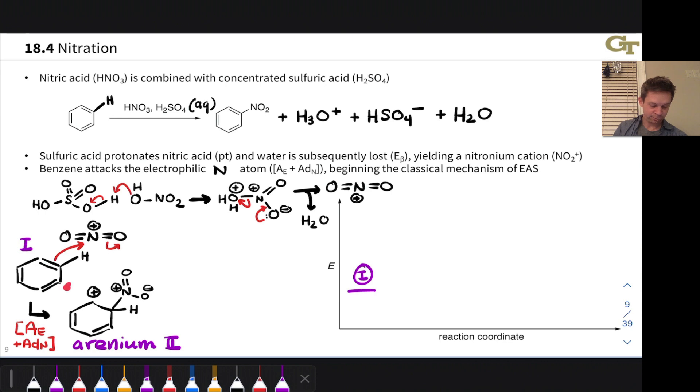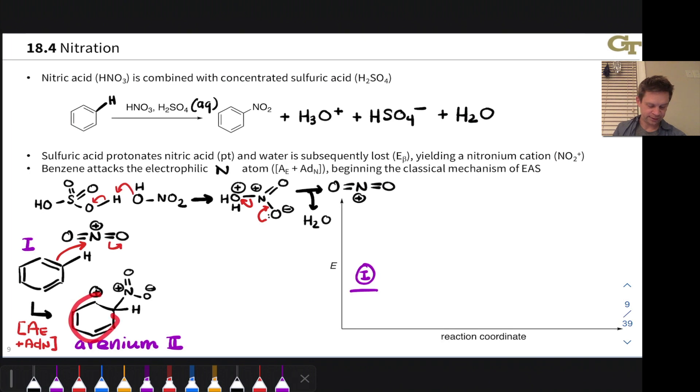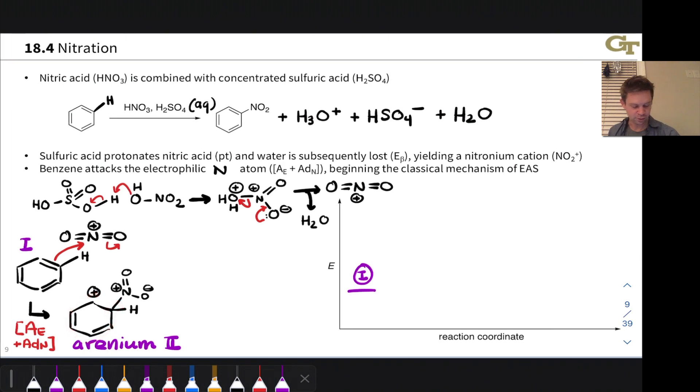And the resulting intermediate is, as we've seen previously, an arenium ion. Now there's positive charge delocalized around this ring in a single saturated carbon right there. Because this step has destroyed aromaticity, it's heavily uphill, very endergonic to get up to the arenium intermediate.